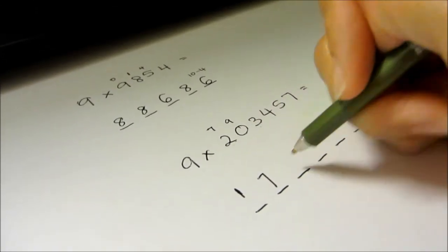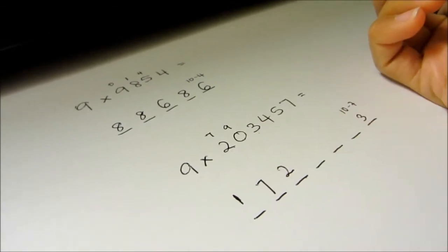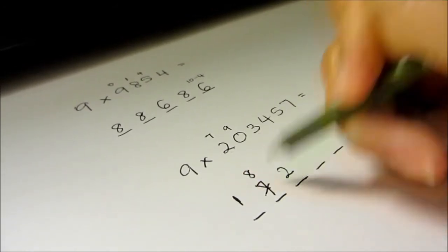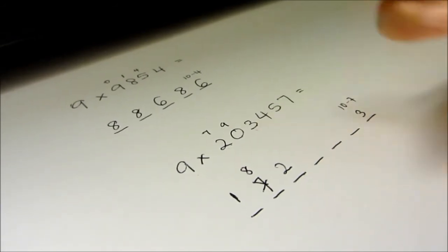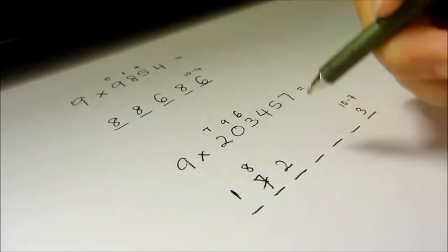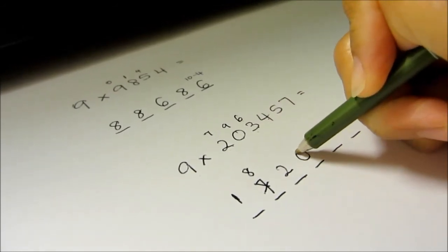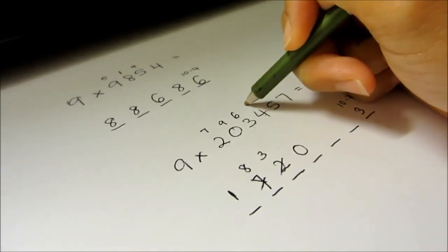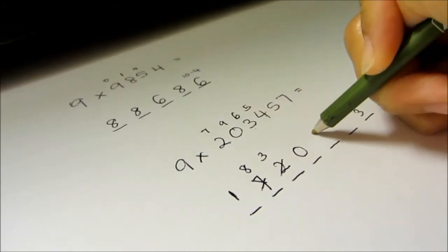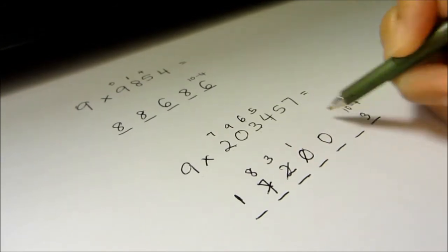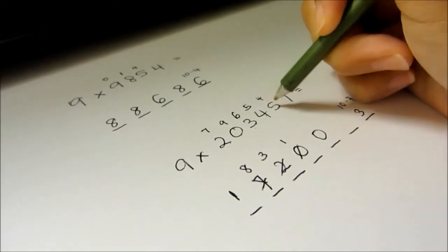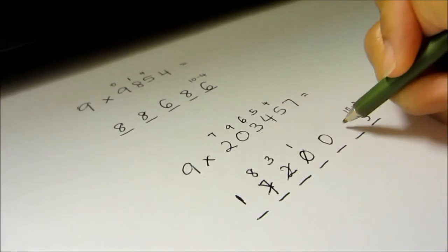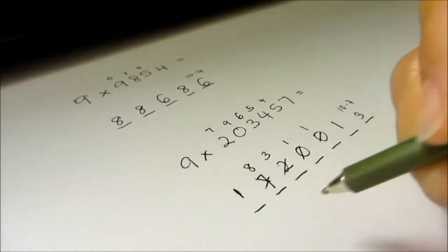9 minus 0 is 9, so the third digit is going to be 3 plus 9, which is 12 — so you put 2 here, and the 1 gets added to the 7, making it 8. Next: 9 minus 3 is 6, and 4 plus 6 is 10 — so it's 0 here, and carry 1, making that digit 3. Then 9 minus 4 is 5, and 5 plus 5 is 10 — carry 1. The next digit: 9 minus 5 is 4, and 7 plus 4 is 11 — so put 1 here and carry 1, making the answer 8.